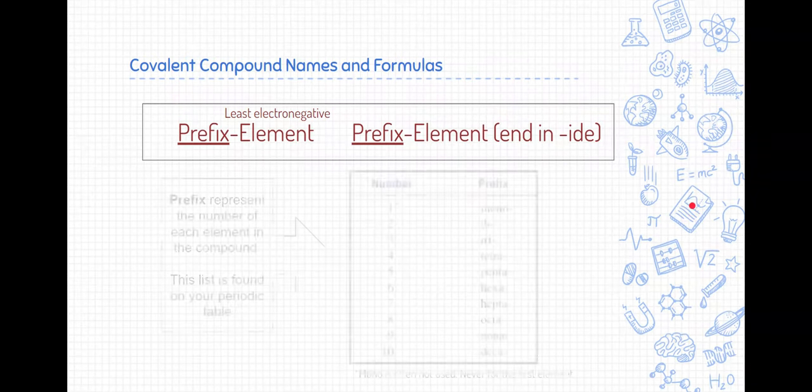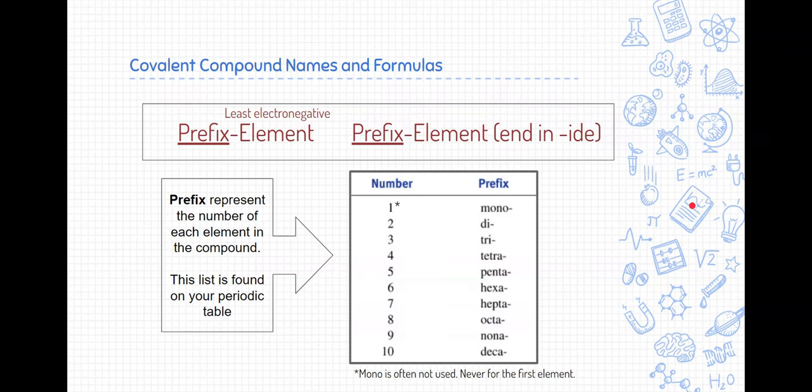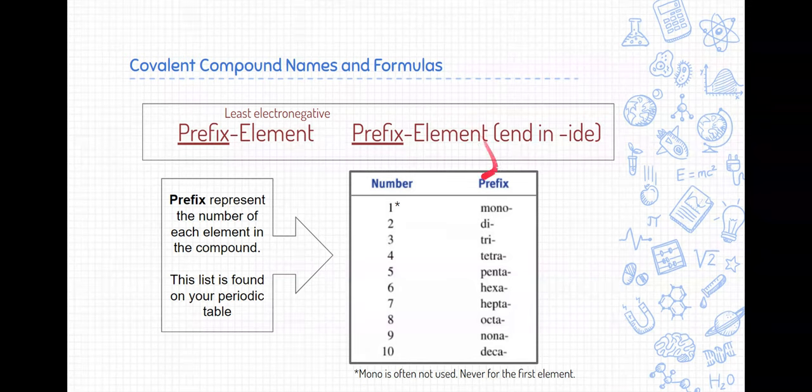Let's start with those prefixes. The prefix just represents the number of each element in the covalent compound. Here's a list that's found on the back of your periodic table. Mono typically means one, like a monocle or a single eyepiece. Di, like to divide something into two, means two. Tri, like a tricycle or a triforce, is three. If you ever played Tetris, you might recognize that all the pieces in Tetris are made out of four little squares. And then the rest of them might seem vaguely familiar from math class when you deal with different types of polygons, like a pentagon, a hexagon, maybe even an octagon. Going down this list, we're going to use these as the prefix in the names.